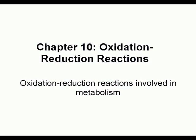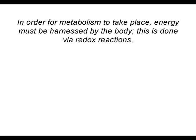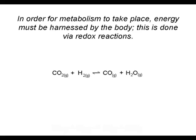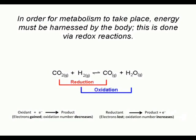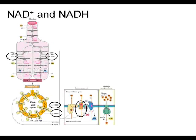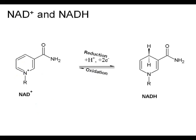Oxidation and reduction reactions: how are redox reactions involved in metabolism? In order for metabolism to take place, energy must be harnessed by the body via redox reactions. Redox reactions involve a reduction and an oxidation reaction. A reduction reaction is when a reactant gains an electron — this reactant is called the oxidizing agent. An oxidation reaction is when a reactant loses an electron — this reactant is called the reducing agent. In metabolism, NAD+ and NADH are harnessed in all stages — the reduction reaction goes from NAD+ to NADH, and the oxidation reaction goes from NADH to NAD+.